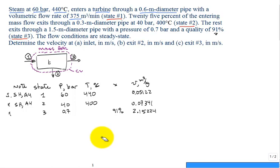So basically we're asked to calculate what is that velocity at the inlet. So we're looking to find V1, V2, the velocity at state two, and V3. They're all velocities.